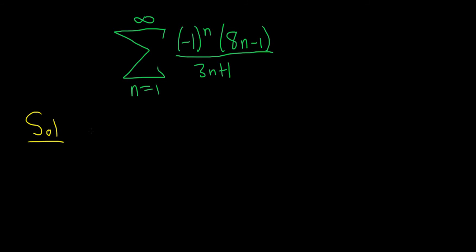So in the alternating series test, you first have to identify your a sub n. A sub n is your non-alternating part. So in this case, the non-alternating part is 8n minus 1 over 3n plus 1.